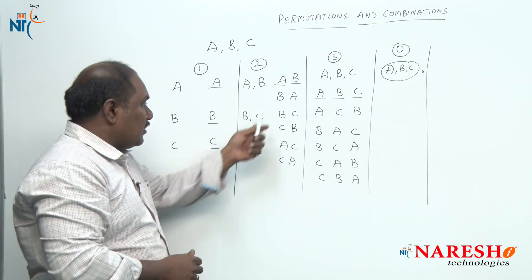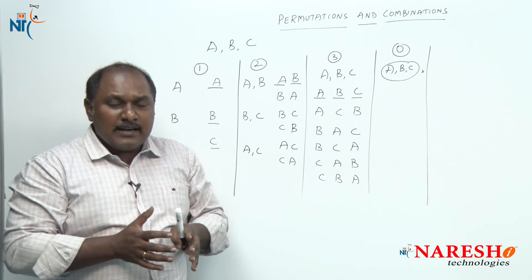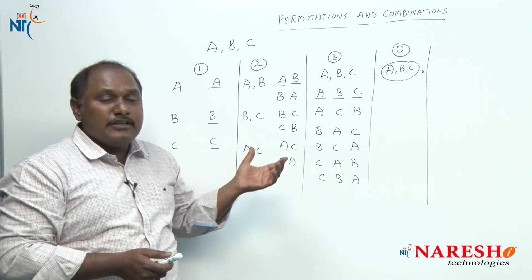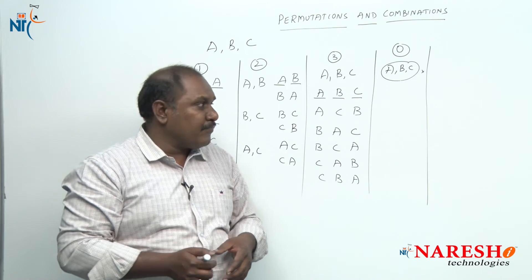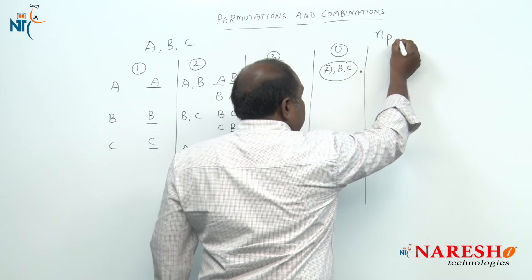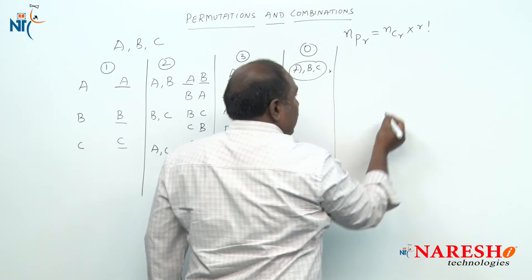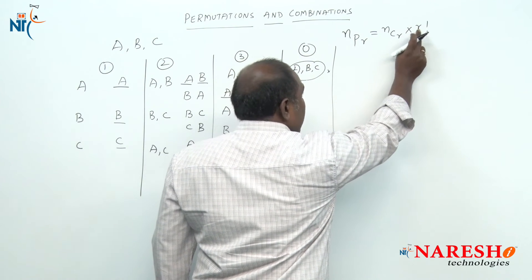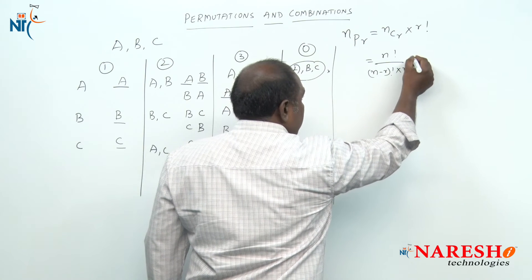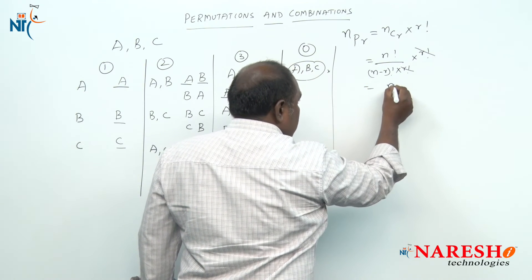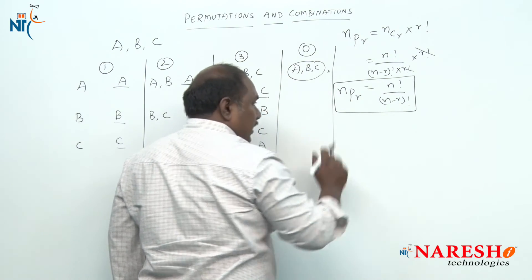Each of these arrangements is called a permutation. The definition: out of n different things, we select r things and arrange them — each such arrangement is called a permutation. n different things selected all at a time can be arranged in n factorial ways. The formula: n different things selected r at a time can be arranged in nPr ways, which equals nCr into r factorial. Simplifying — n factorial divided by (n minus r) factorial into r factorial, into r factorial — the r factorials cancel, giving nPr equals n factorial divided by (n minus r) factorial.